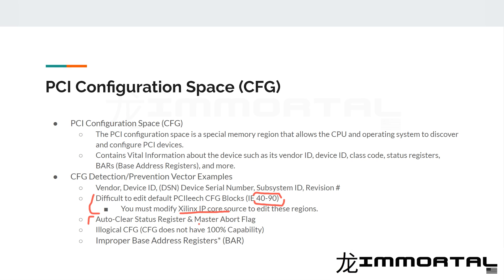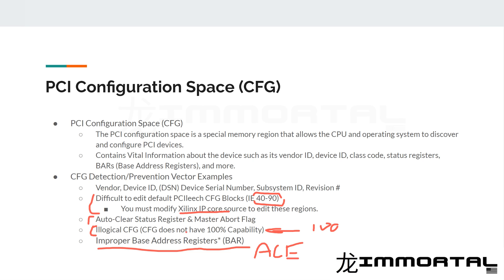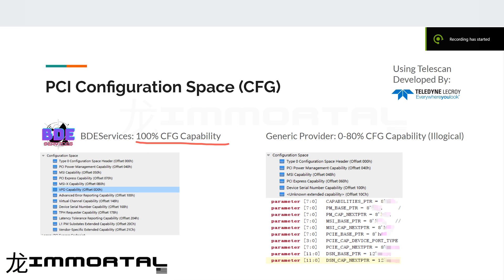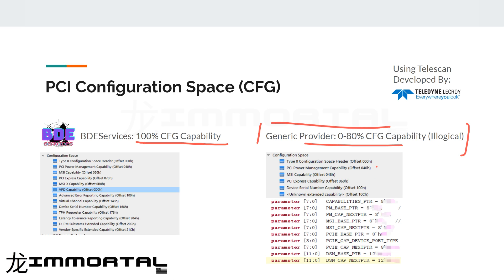We're going to talk about the illegal config space. This means your CFG isn't 100% capability-complete — they haven't fully customized your firmware to look exactly like another device. You'll also see improper base address BARs, which is a little more specific. ACE Anti-Cheat, made by Tencent, has touched on BAR and illegal config space. Right here we have an example of a 100% config space compatibility versus a generic provider's config space, which we call illogical — it's missing a lot of capability because they have not edited the PCI core to properly change that.